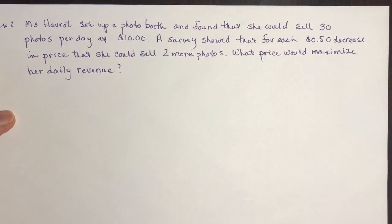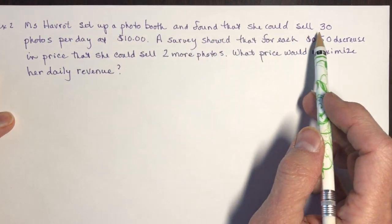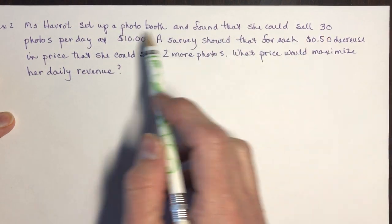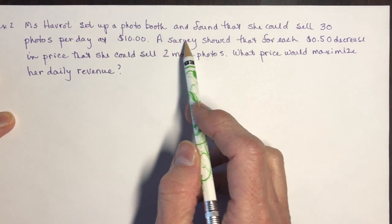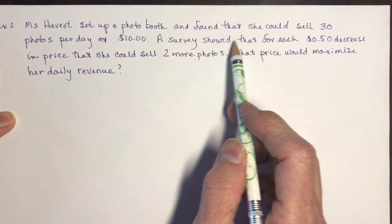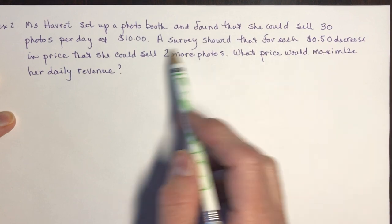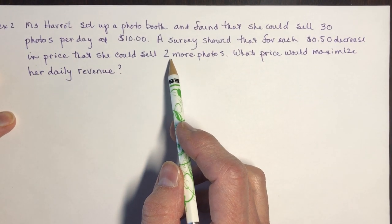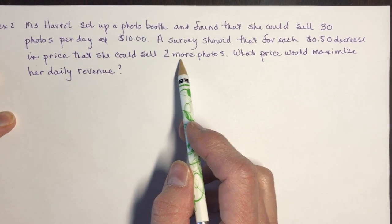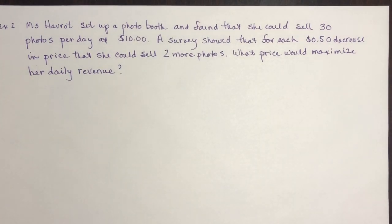A photo booth problem: Miss Havrot set up a photo booth and found she could sell 30 photos per day at $10. A survey showed that for each 50 cent decrease in price she could sell two more photos. What price would maximize her daily revenue?